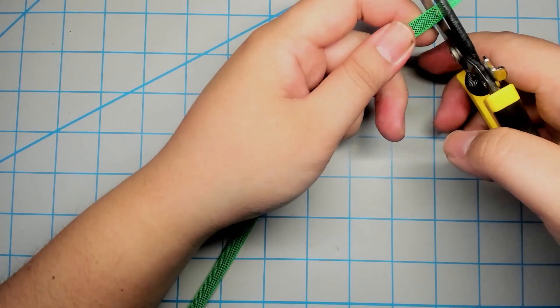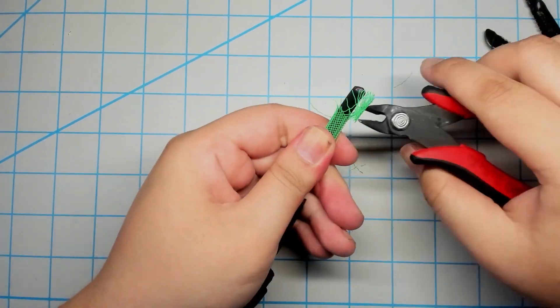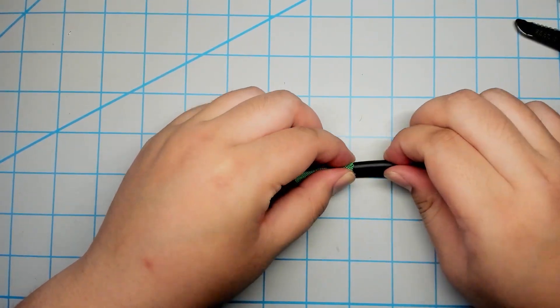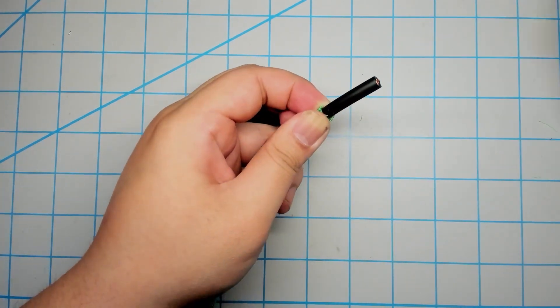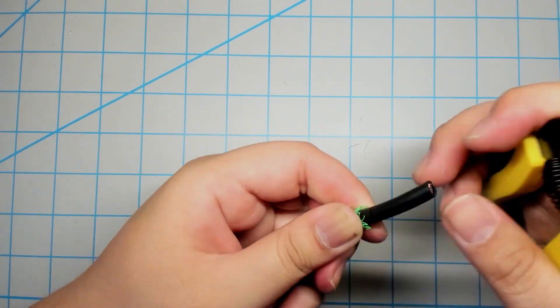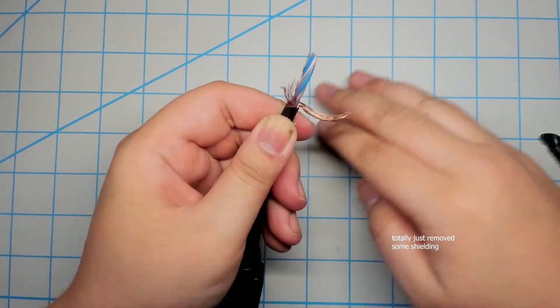Now let's get started stripping. I use a pair of micro cutters to expose about one inch of bare cable. I then gently remove about an inch of jacket from the cable. I'm using a cable cutter for this but you can also use something like an Exacto knife to be more precise. Just make sure you don't remove any of the metal shielding inside.